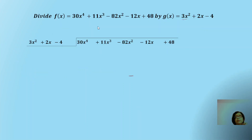Let us take a simple example to understand this division process. Here we have f(x), a fourth-degree polynomial, and g(x), a second-degree polynomial. First, we arrange both polynomials in descending order of the exponent of x. So here we have 30x⁴ as the first term of the dividend and 3x² as the first term of the divisor. We concentrate on the first terms: to get 30 from 3, we multiply by 10, so the coefficient of the first quotient term is 10. Since x² × x² = x⁴, the first quotient term is 10x².